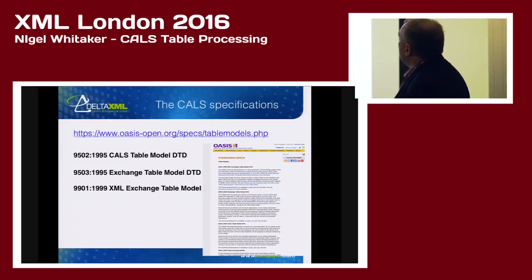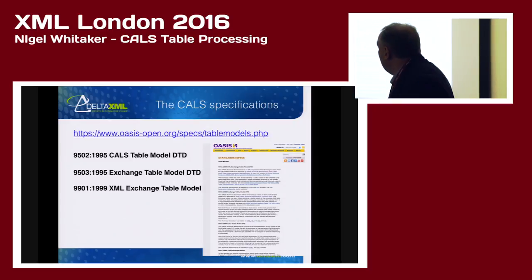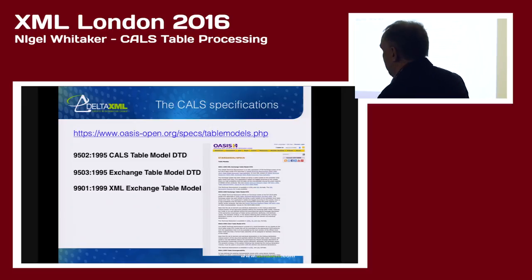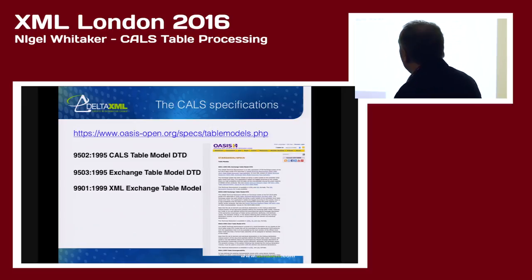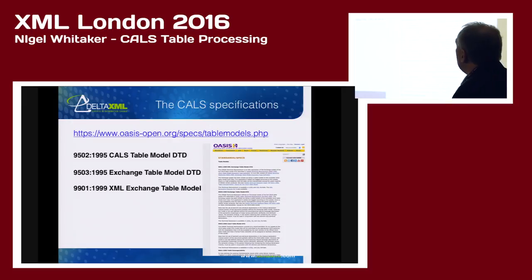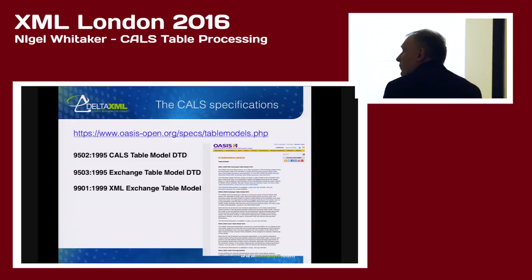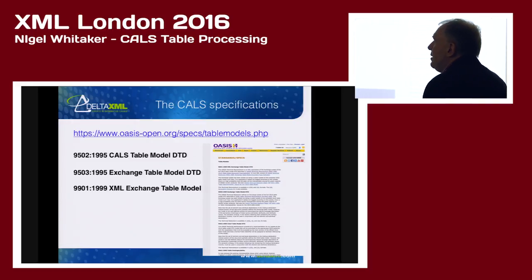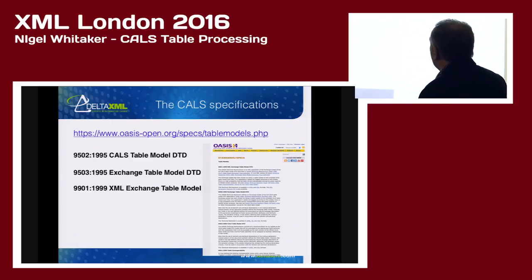So, what is CALS? It's an OASIS specification — well, a set of specifications. They go back a few years and in some cases pre-date XML, so some of them are coming from the SGML world. We take the view that we treat them as a set and try to implement all of those things.